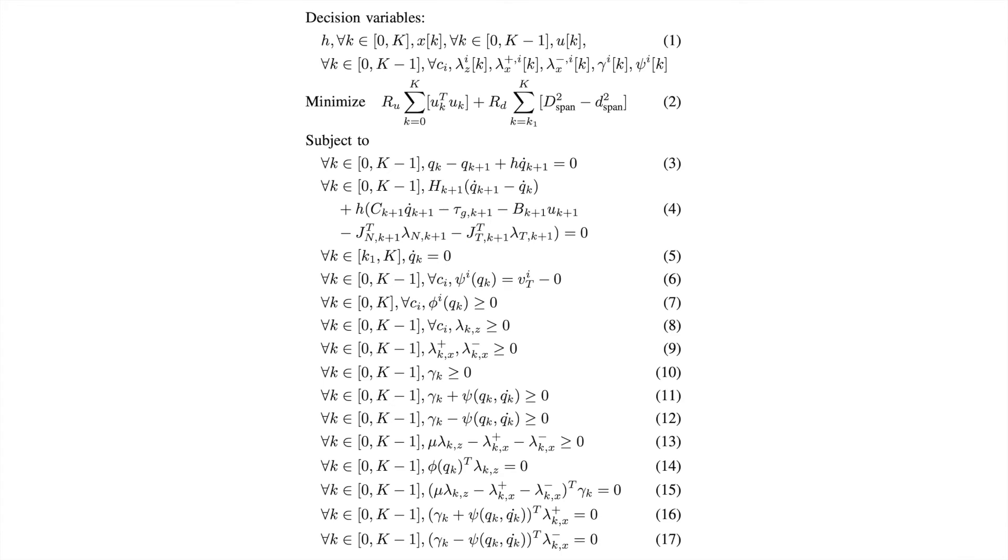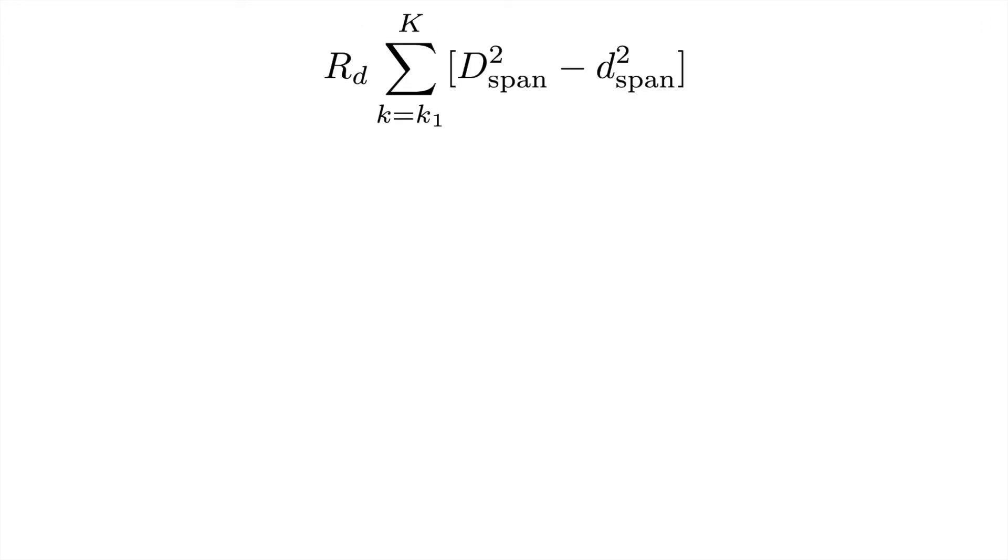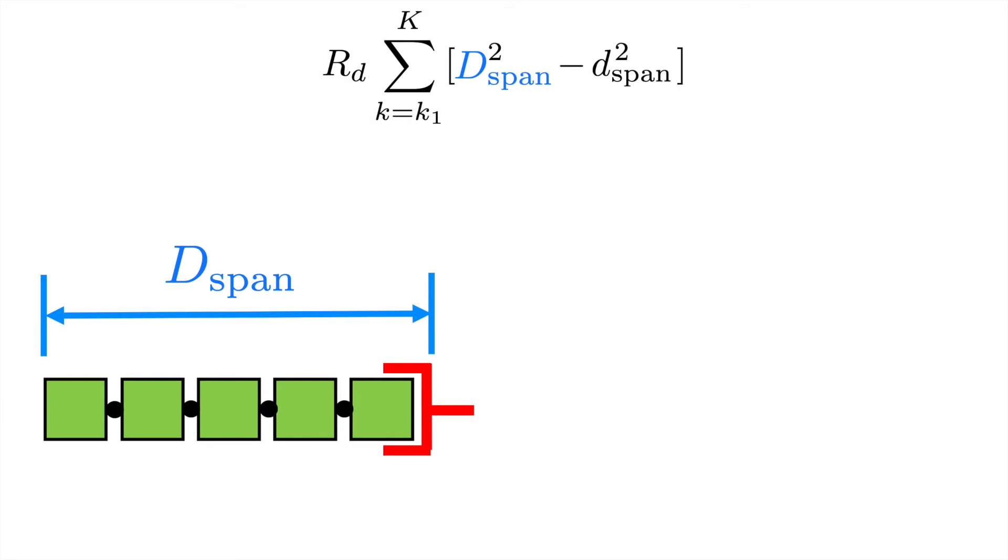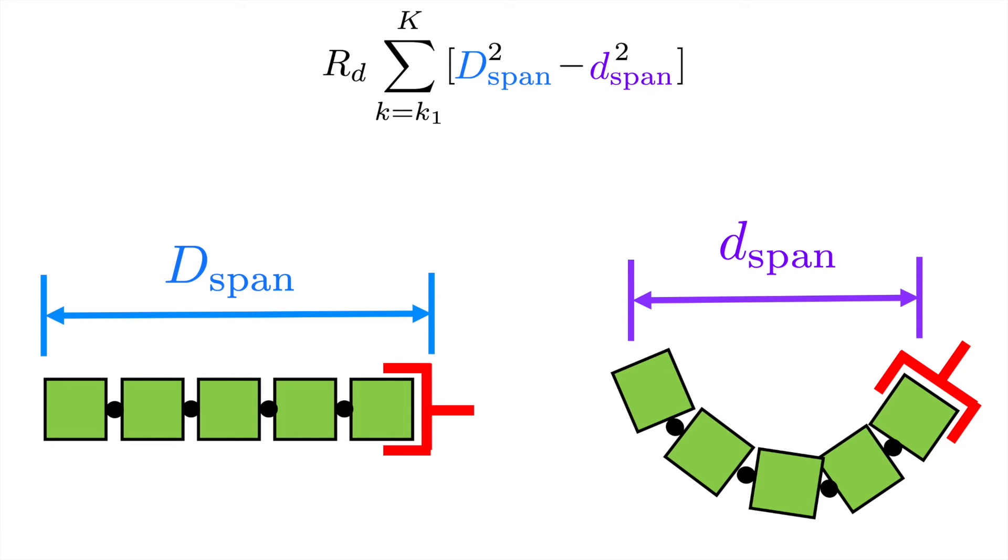Our formulation is similar to the original work. I want to highlight several things here. First, the objective functional. What does this mean? The uppercase D span is the total length of the rope. The lowercase d span is the distance between the two ends of the rope, given any rope configuration.